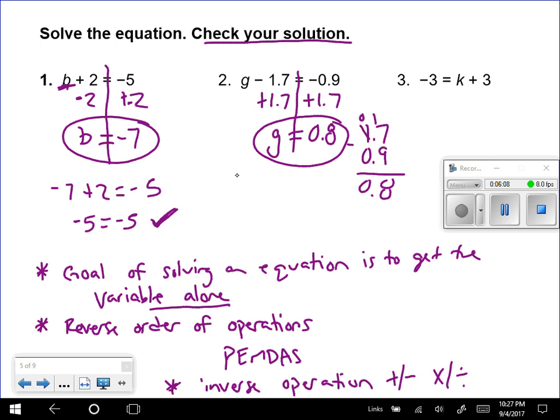I can check that. 0.8 minus 1.7 should equal negative 0.9. So keep change change. And then this would be 0.9 negative. And we know we got it right.